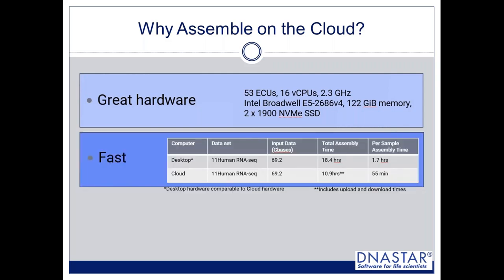NVMe stands for Non-Volatile Memory Express. These drives are five to ten times faster than an SSD, so this hardware produces really fast assembly times. For benchmarking, we built a local computer as similar to the cloud computer as we could. The dataset is 11 human RNA-seq samples, about 69 gigabases of data. On a fast desktop it takes about 18.5 hours total, averaging 1.7 hours per assembly.